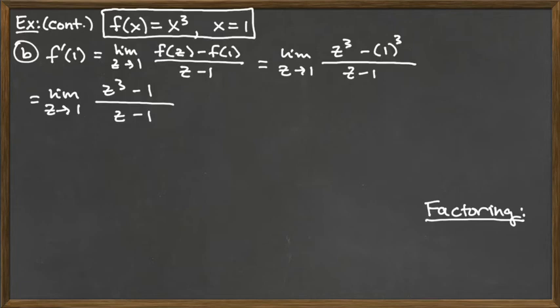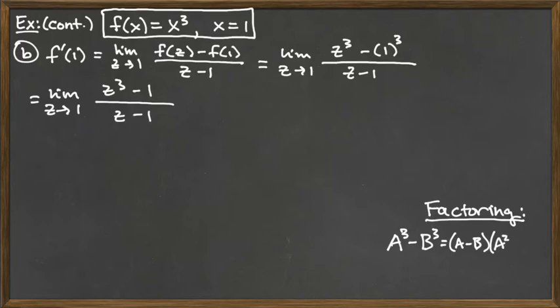The difference of cubes: if you have a cubed minus b cubed, the factorization gives you a first factor of a minus b, just dropping the cube. Then the remaining factor has a squared as the first term, and — sorry — a plus b squared as the third term.